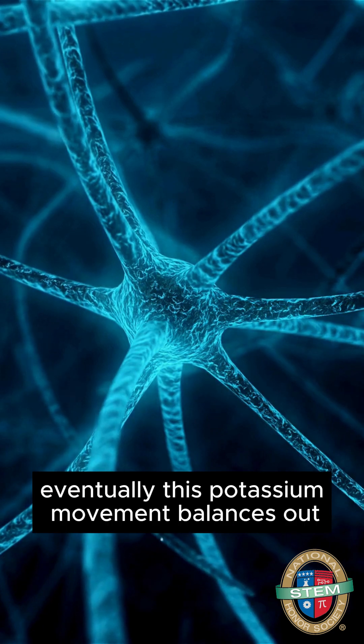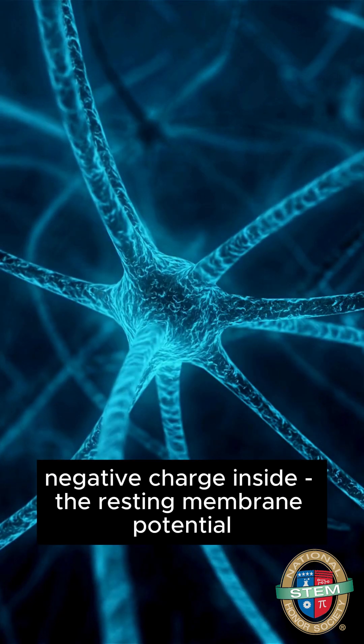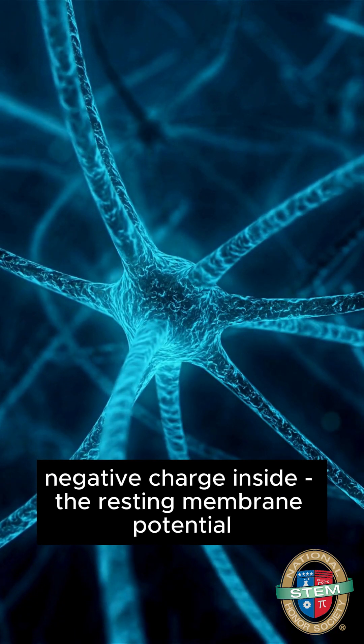Eventually, this potassium movement balances out, creating a stable negative charge inside - the resting membrane potential.